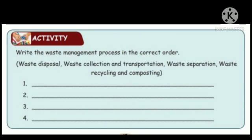In textbook page number 65, there is an activity. Write the waste management process in the correct order. There are four numbered lines given, with clue words above. The steps in the waste management process — the words given are: waste disposal, waste collection and transportation, waste separation, and waste recycling and composting. Let us write them in the correct order.